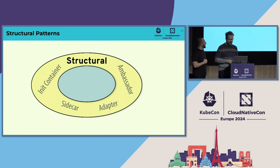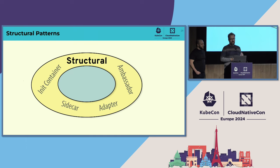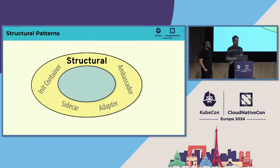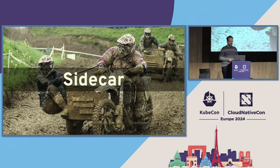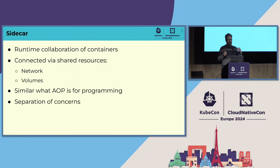Next stop: structural patterns. These are higher-level patterns based on Kubernetes core concepts that you typically don't find directly in Kubernetes but can easily implement. We'll look at the sidecar, probably one of the most famous patterns. It's about how you can enhance the functionality of your application in a container without directly touching the application. If you're coming from the programming world, it's a bit like aspect-oriented programming — you put orthogonal aspects onto your application just by combining two containers.